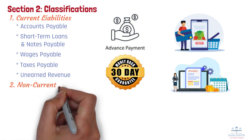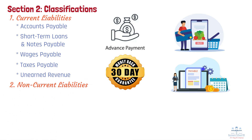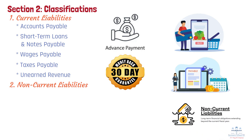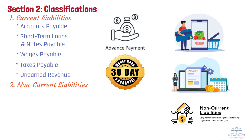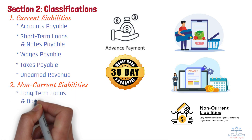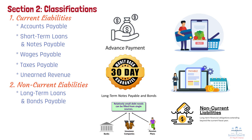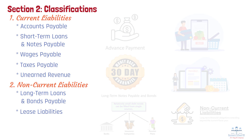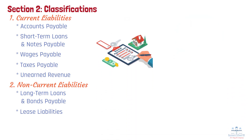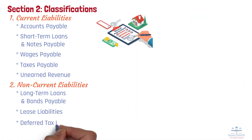Type 2: Non-Current Liabilities. Non-current liabilities are financial obligations that extend beyond one year. These liabilities are crucial for financing long-term investments and business expansion. Examples include: Long-Term Loans and Bonds Payable, which refers to money borrowed for expansion or large capital projects payable over several years; and Lease Liabilities, which refers to long-term rental agreements for property or equipment.